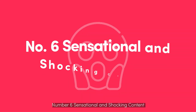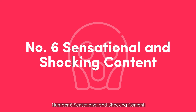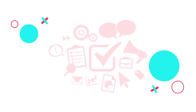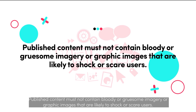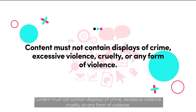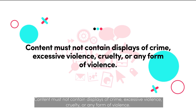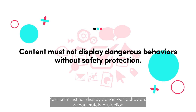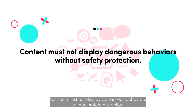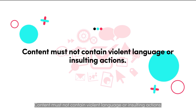Number 6: Sensational and shocking content. Published content must not contain bloody or gruesome imagery or graphic images that are likely to shock or scare users. Content must not contain displays of crime, excessive violence, cruelty, or any form of violence. Content must not display dangerous behaviors without safety protection. Content must not contain violent language or insulting actions.